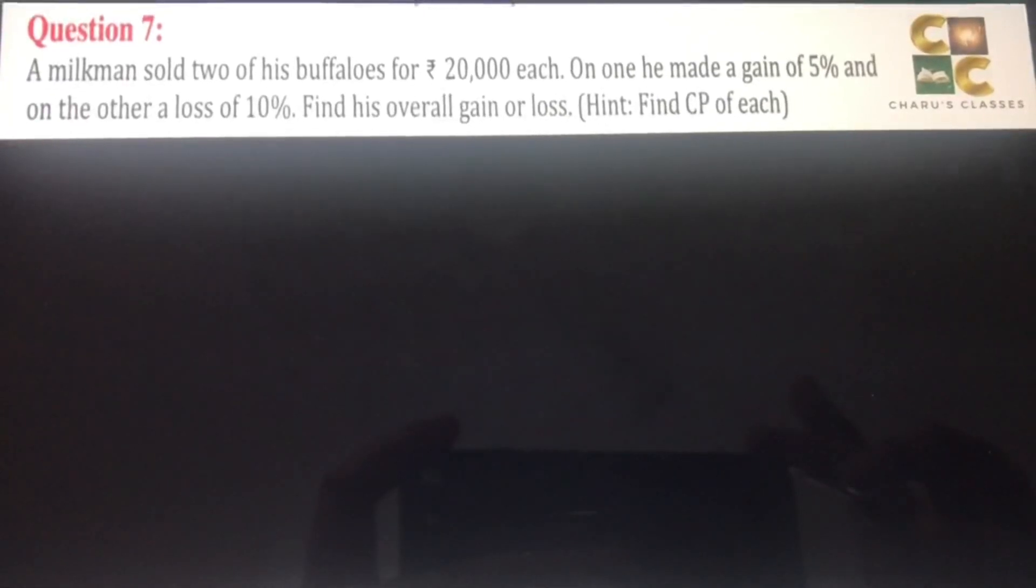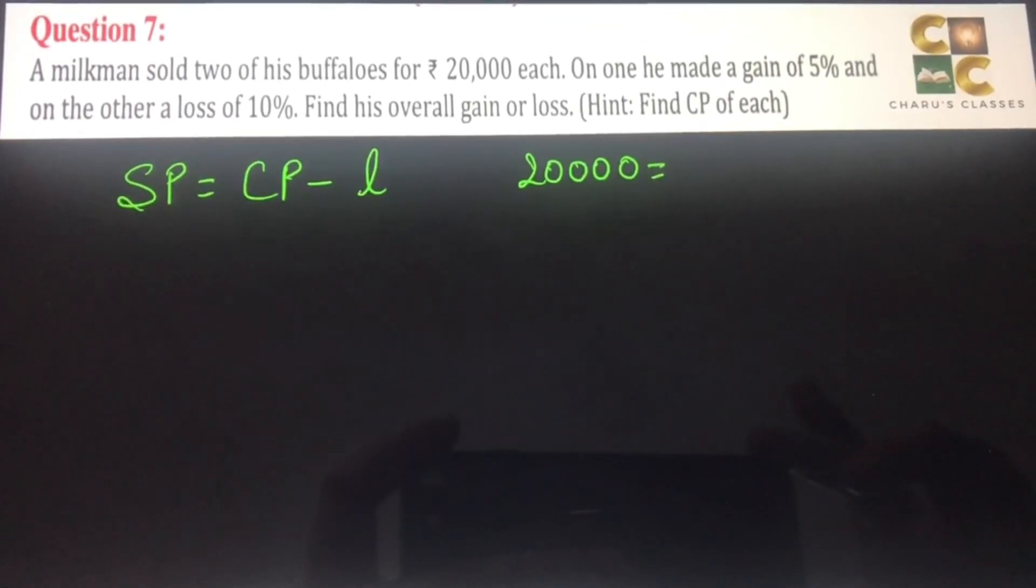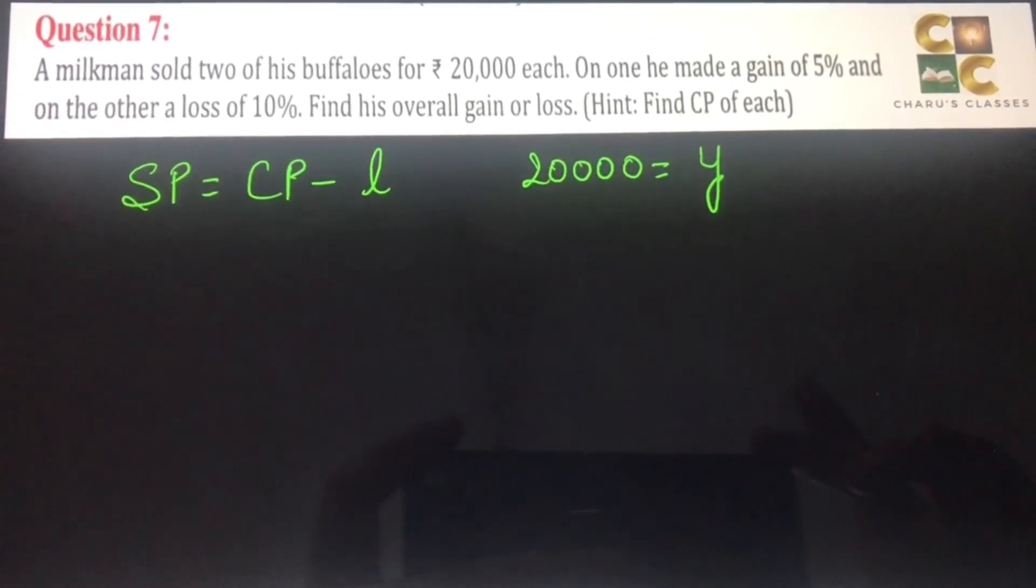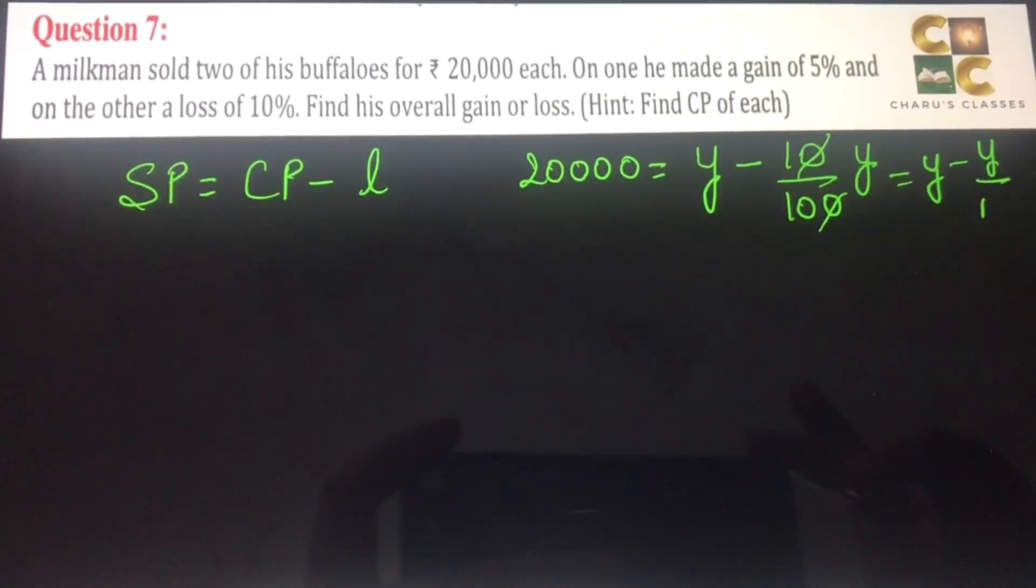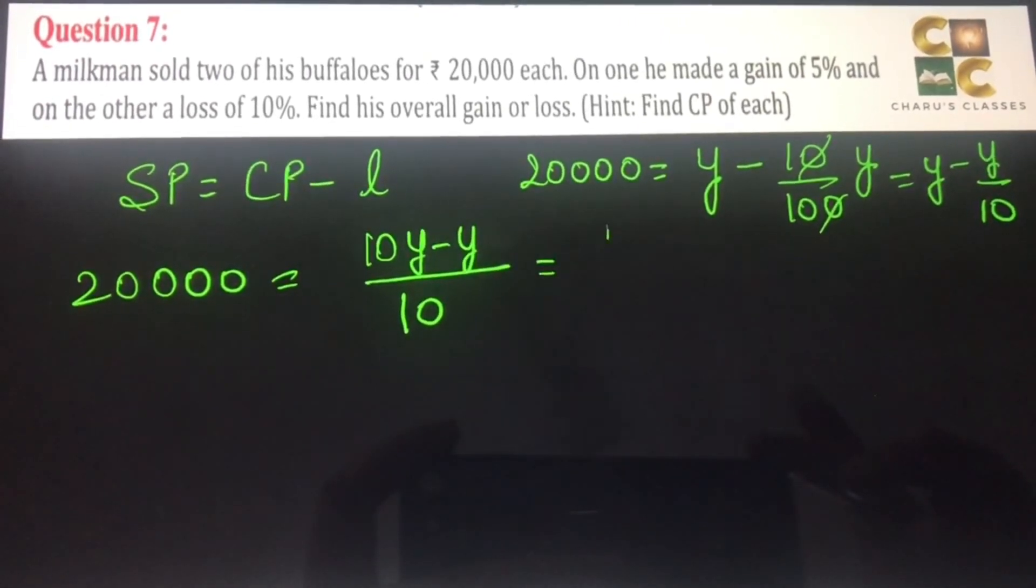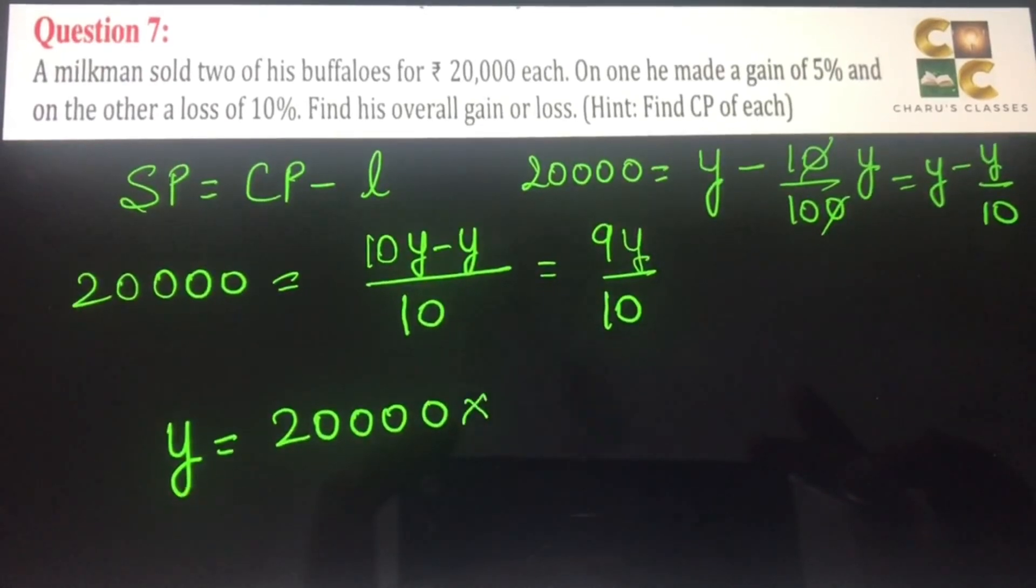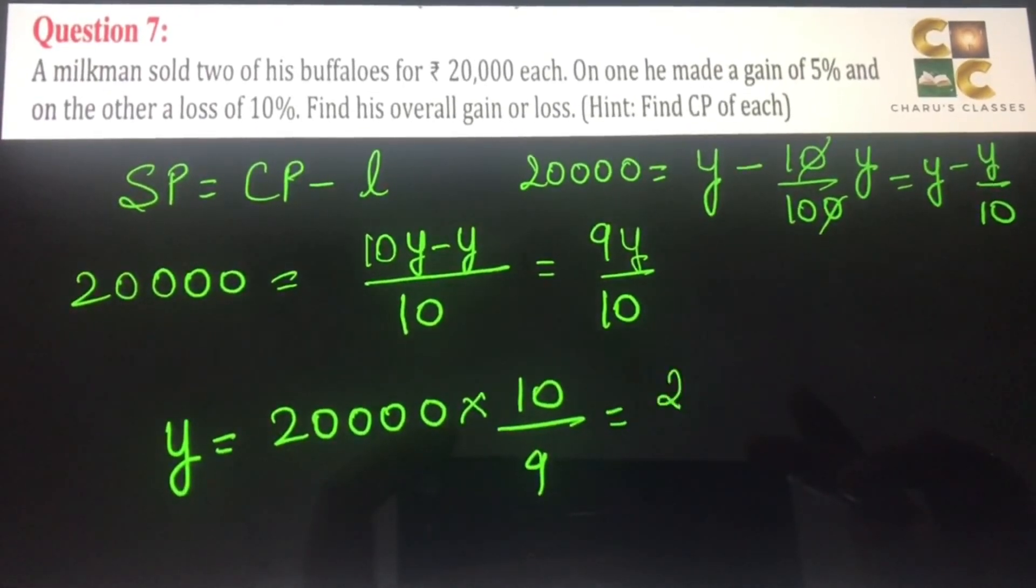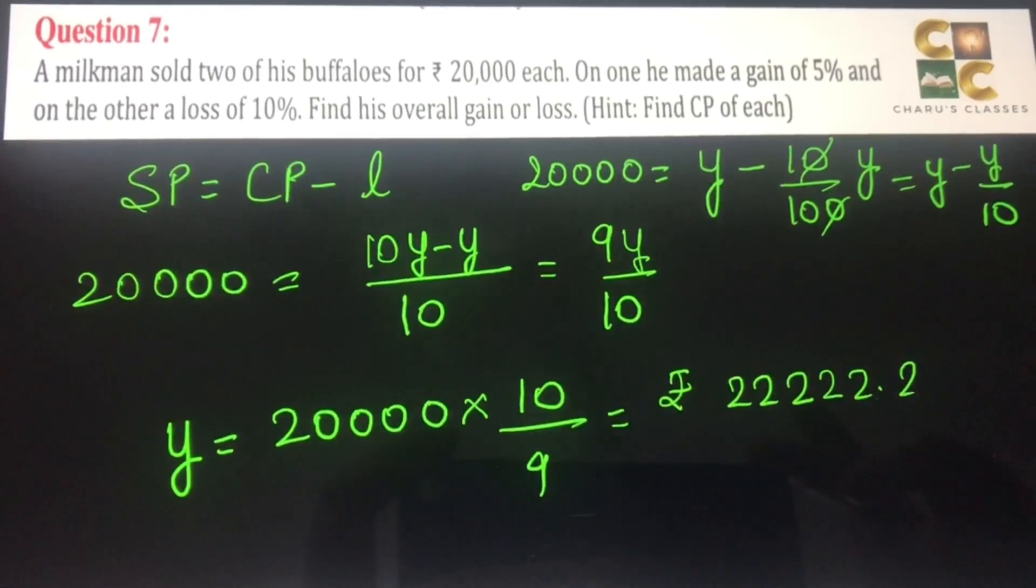For the second buffalo, if there is loss, then the selling price will be cost price minus the loss. The selling price is 20,000. Let the CP of the second buffalo be Y. Loss is 10%, so 10% of cost price which is Y. This is Y minus Y by 10. We take 10 as the common denominator, that is 9Y by 10. So here we get Y as 20,000 multiplied by 10 by 9. If you solve it, the cost price will be rupees 22,222.22.